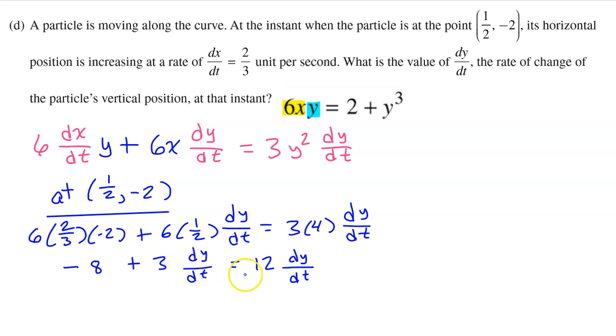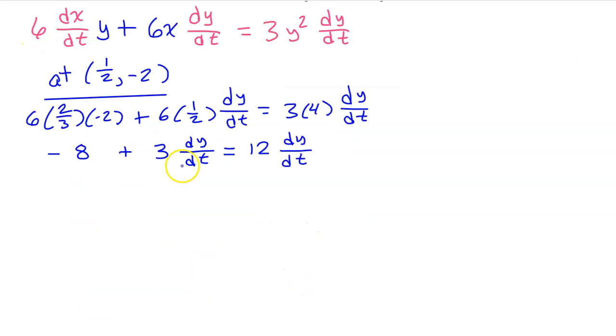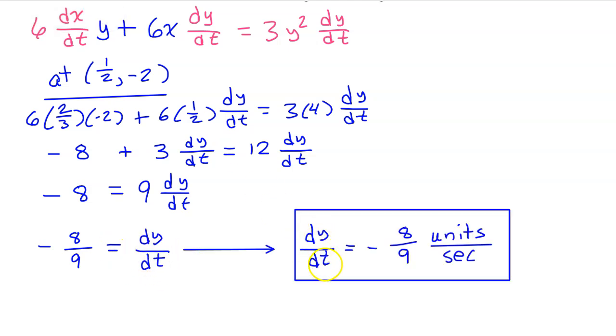Let's get all of the dy/dt expressions on the left, and everything else on the right. Actually, I'm noticing that these dy/dt terms are like terms. So, it will be simpler to just subtract 3 dy/dt from both sides. That will leave -8 is equal to 9 dy/dt. Dividing both sides by 9, we get -8/9 is equal to dy/dt. So, dy/dt equals -8/9 units per second.